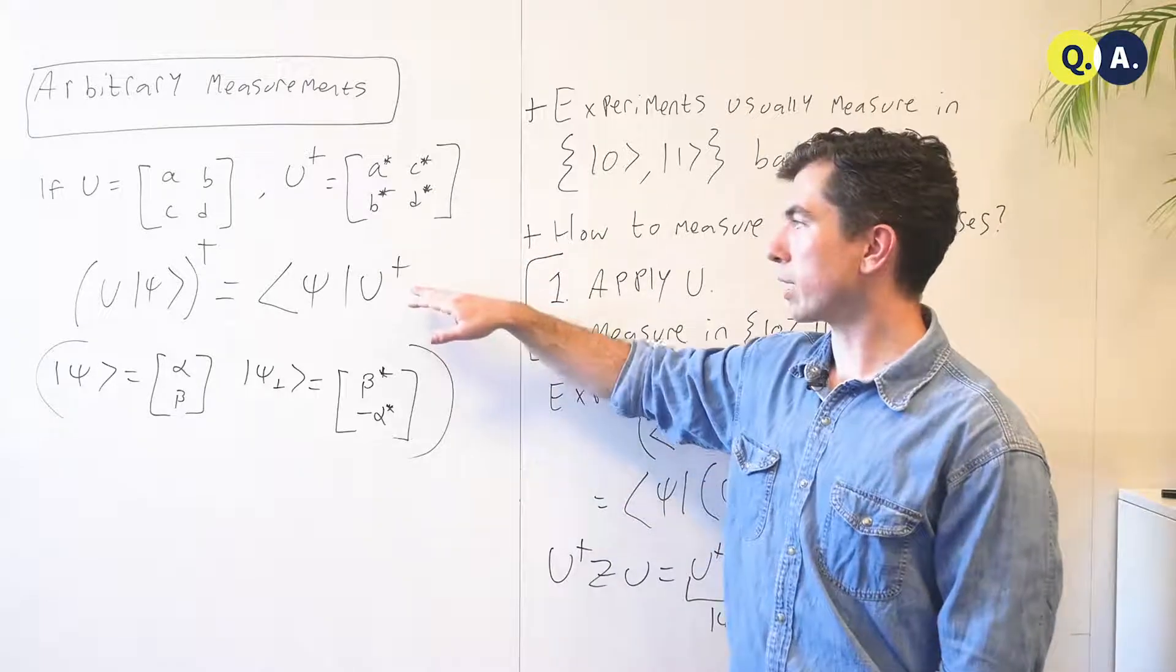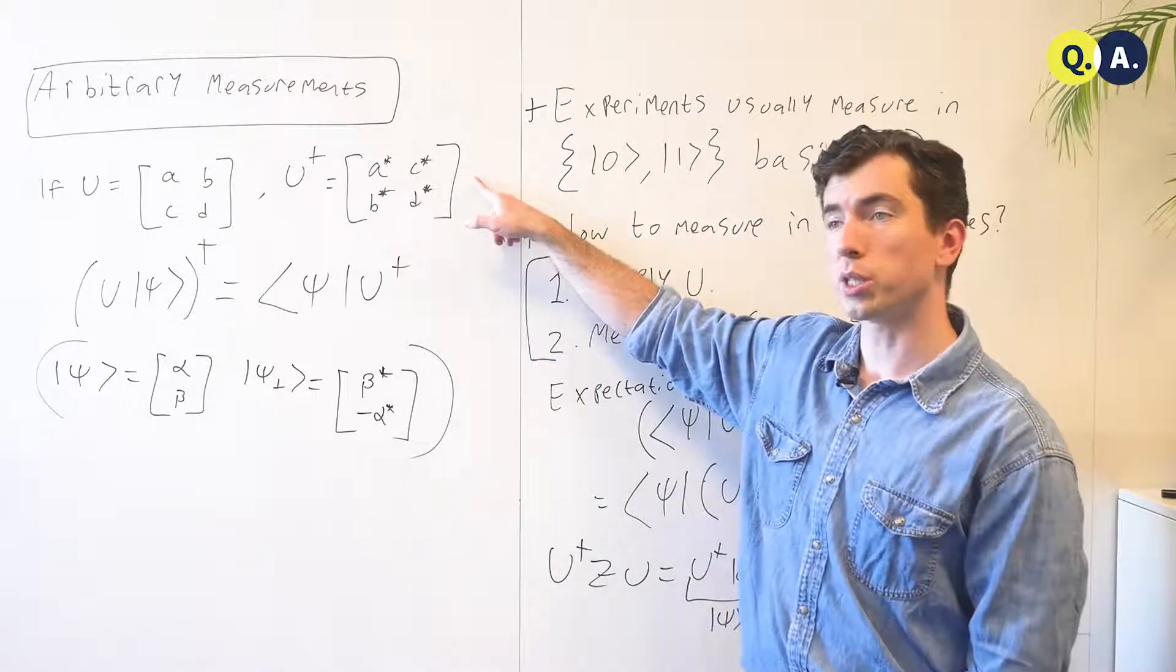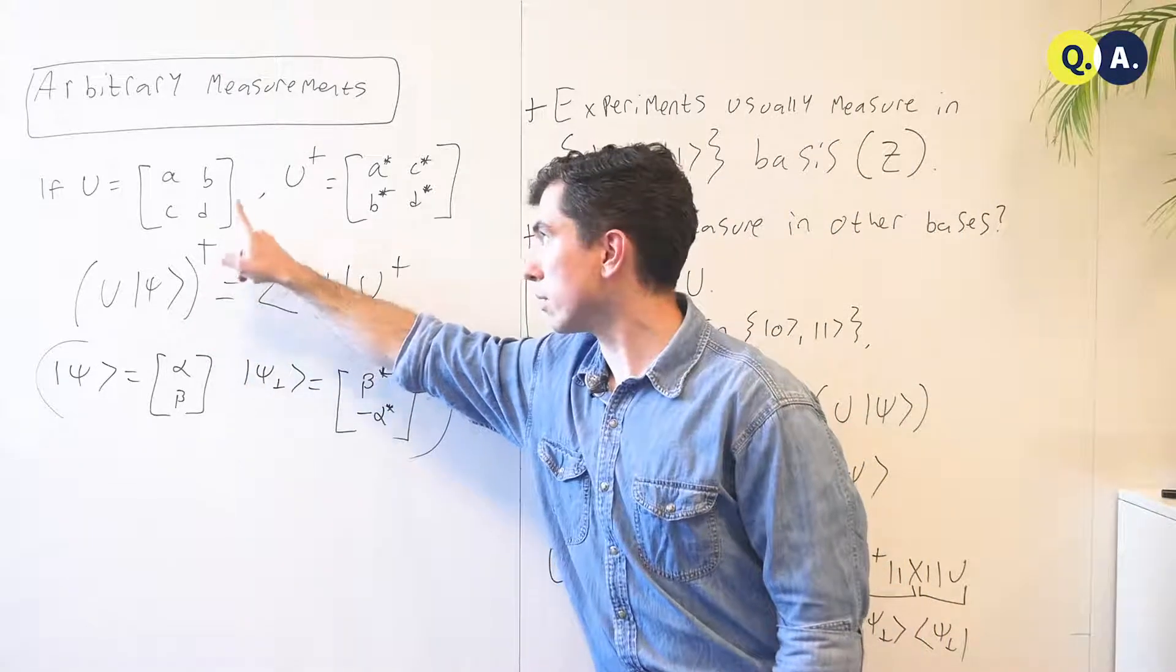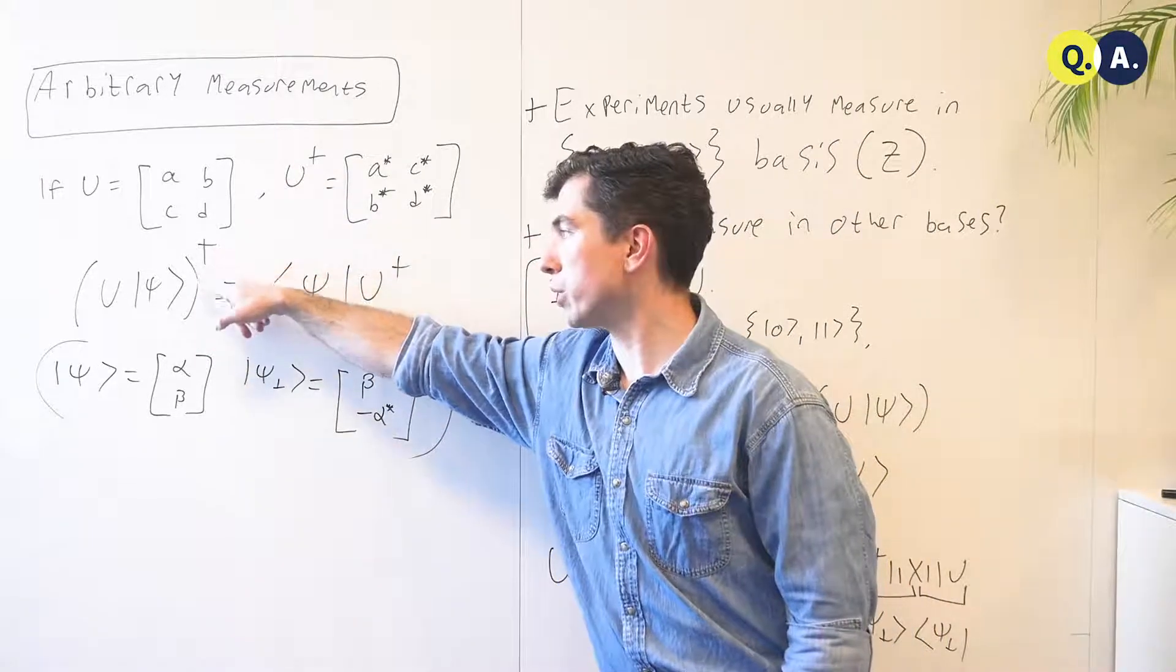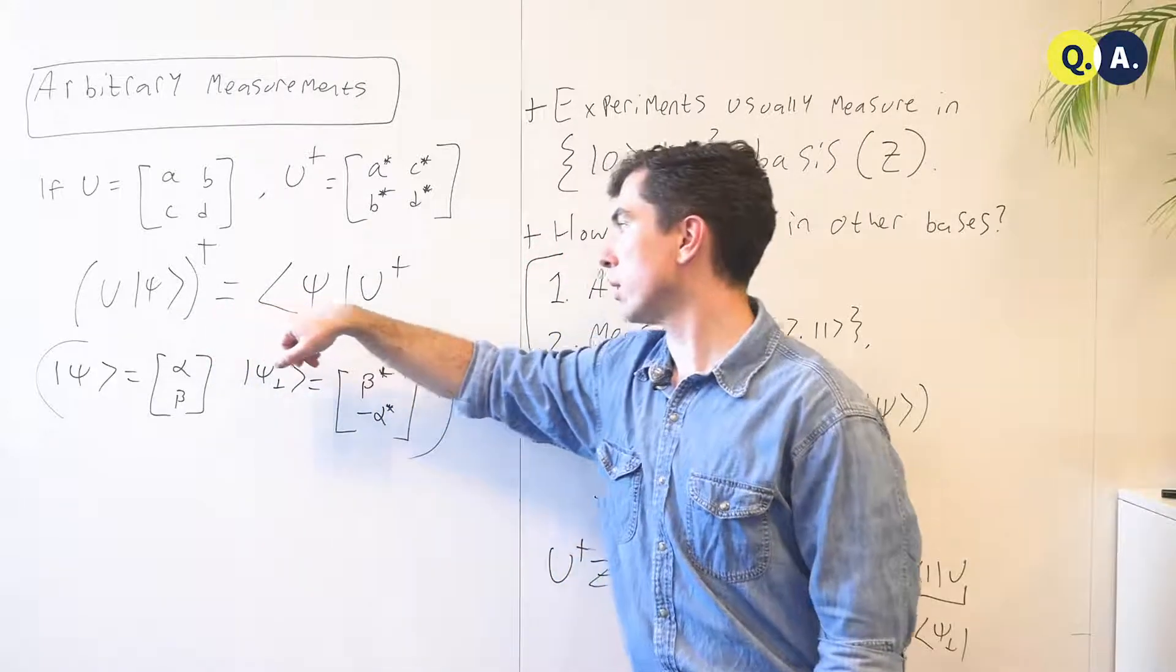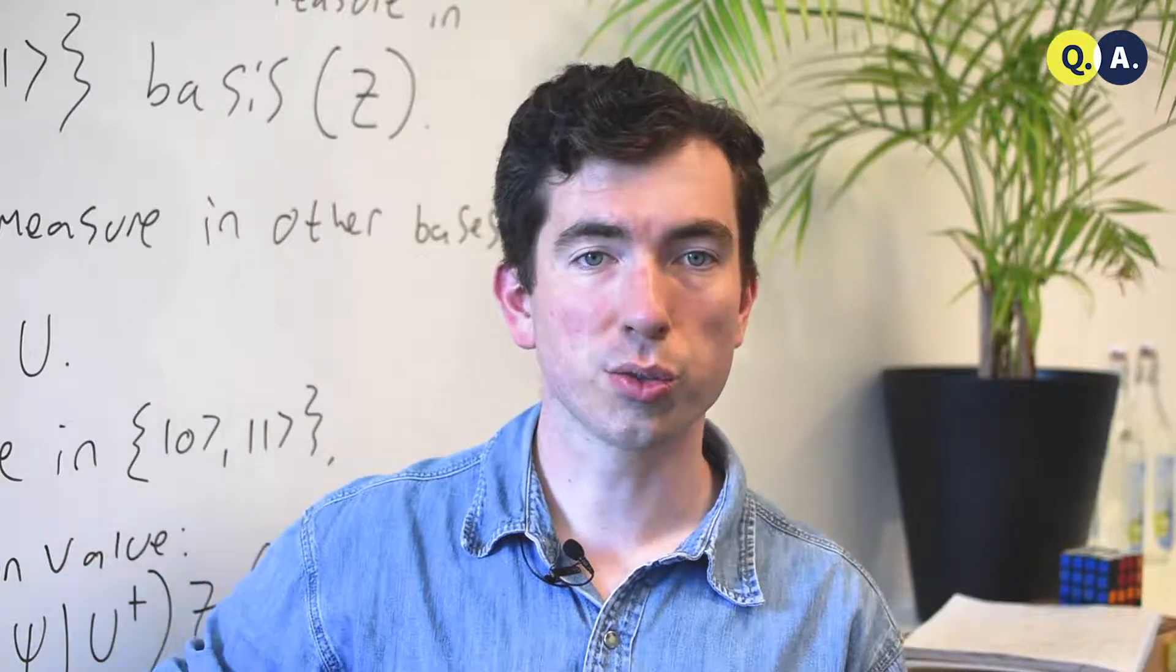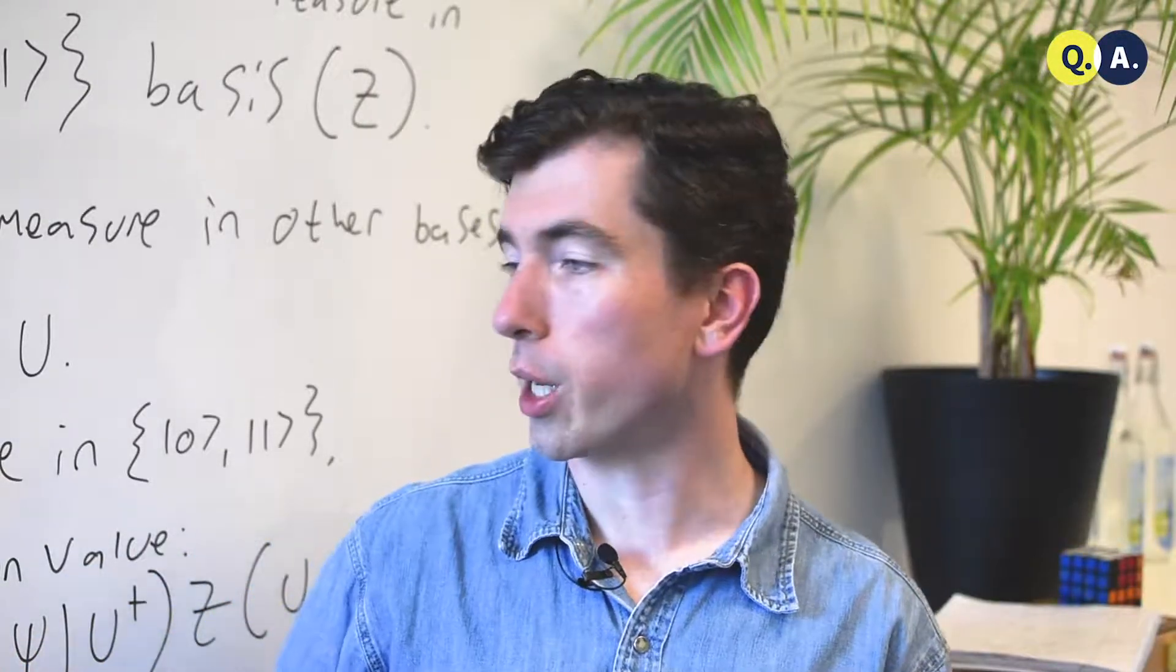A second important fact, which you can prove for yourself using this definition, and I encourage you to do so, is that the dagger, or complex conjugate transpose, of u psi is just the bra for psi times u dagger. Now that follows from linear algebra, but it's easy to check for yourself.